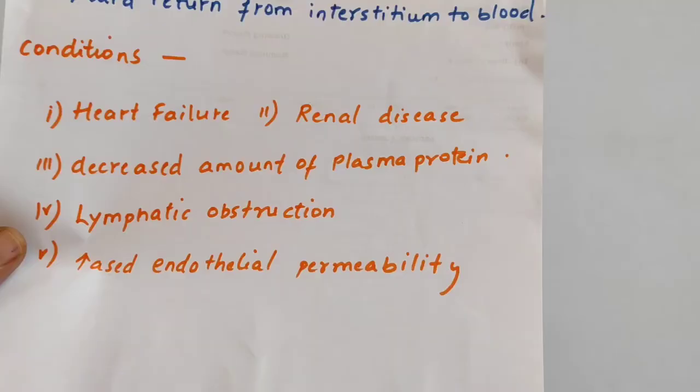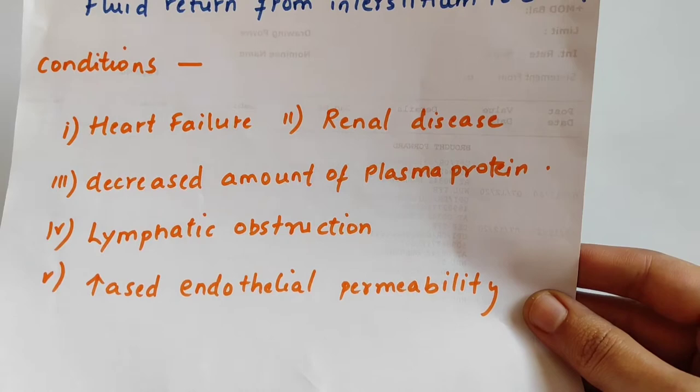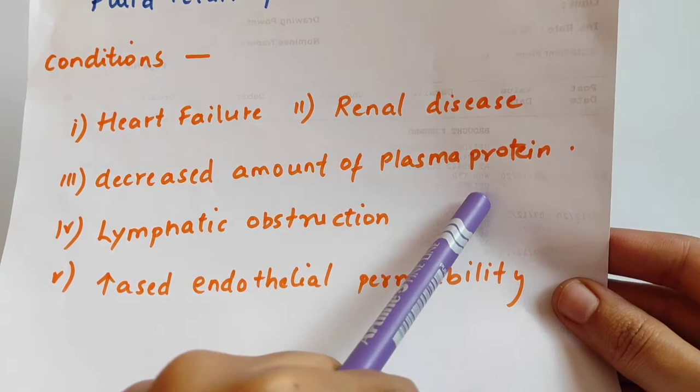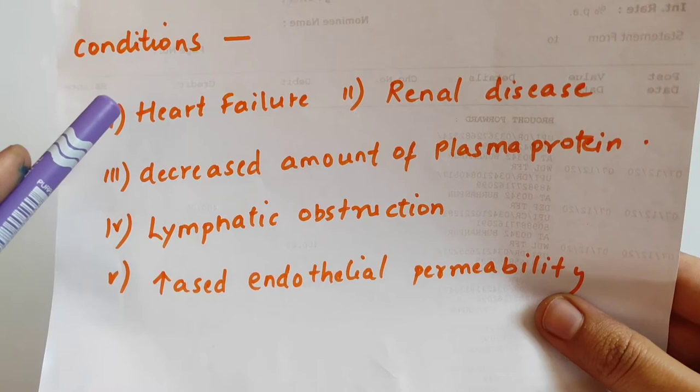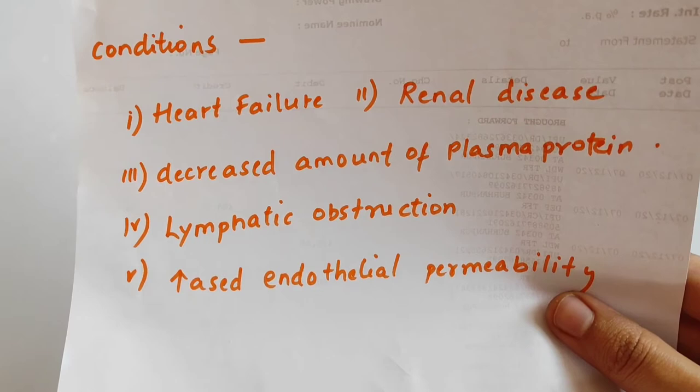Now, which conditions cause extracellular edema? First is heart failure, then renal disease, decreased amount of plasma protein, lymphatic obstruction, and increased endothelial permeability. In heart failure, the heart is not pumping properly, so the body's cells do not receive proper oxygen, their cell membrane integrity is lost, and that is why we see edema.